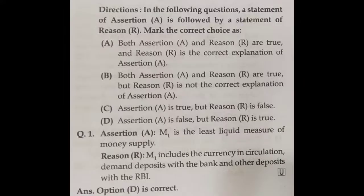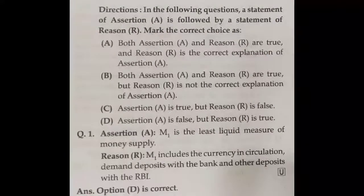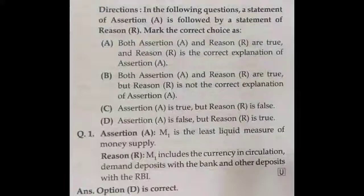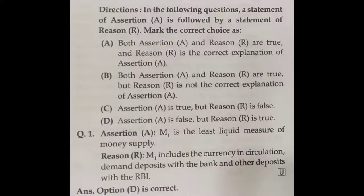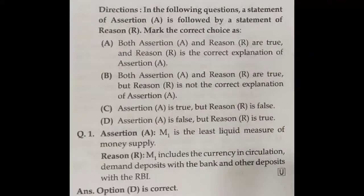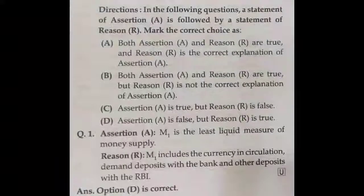Now the assertion and reason-based MCQs. In these questions, a statement of assertion A is followed by a statement of reason R. If both assertion A and reason R are true and reason is the correct explanation of A, tick option A. If both are true but reason is not the correct explanation, tick B. If assertion is true but reason is false, tick C. If assertion is false but reason R is true, tick D.